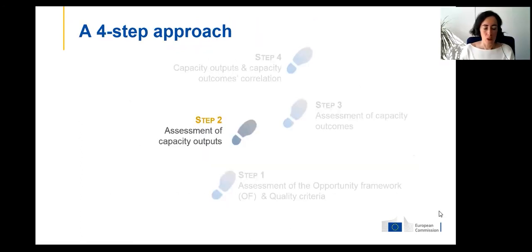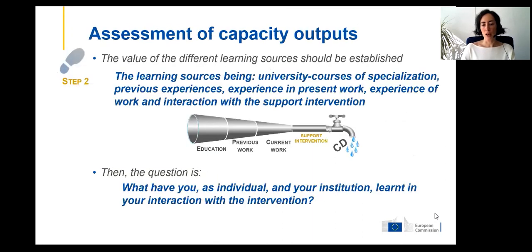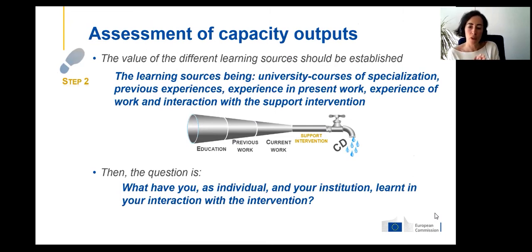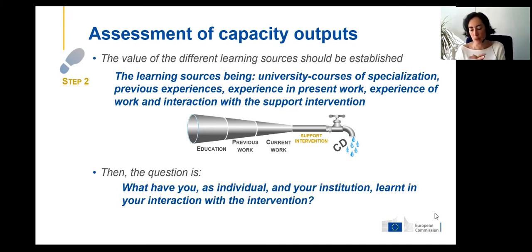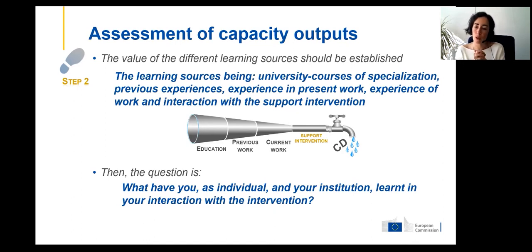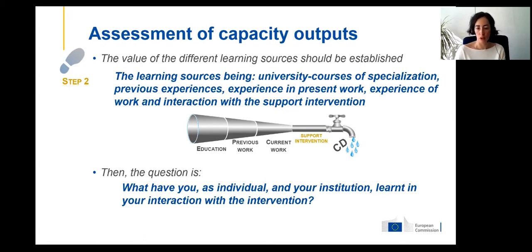Now step two — the assessment of capacity outputs. First, we value the different learning sources. We ask participants to think about their experience gained through education, previous work experience, current work, and the current work interaction with the support intervention. This is what forms an individual's capacities. After reflecting on these four sources, we ask what they — as individuals and within their institutions — have learned through their interaction with the intervention.